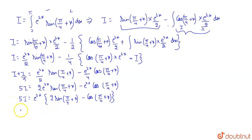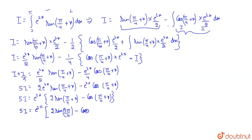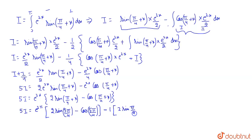Now applying the limits, we get 5I equals e^(2π) multiplied by [2·sin(5π/4) − cos(5π/4)], minus, now putting the lower limit as 0, we get e^0 = 1, multiplied by [2·sin(π/4) − cos(π/4)].